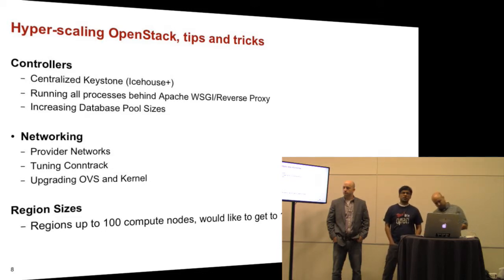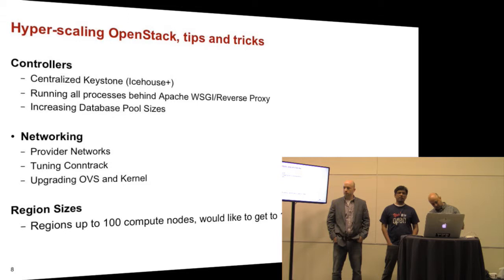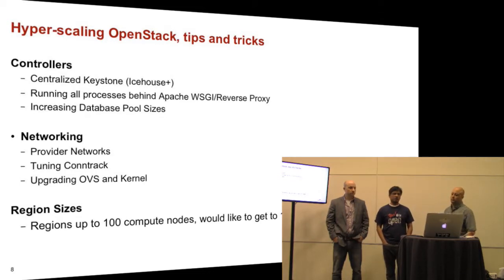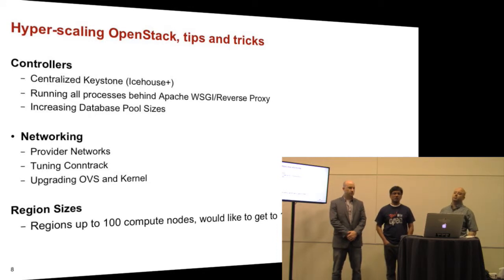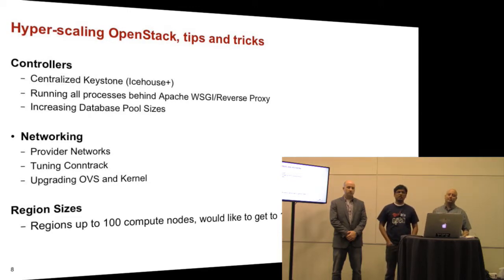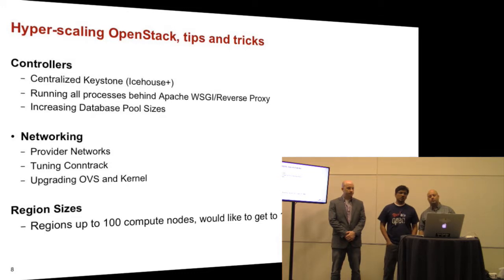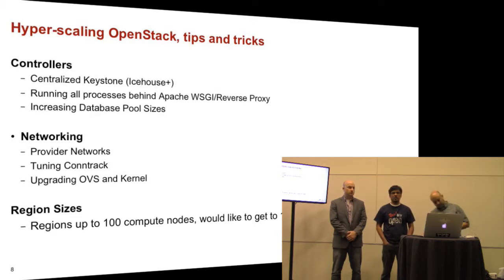On networking, a challenge with Neutron in previous OpenStack versions was a scalability limit — a single network node had to take all network traffic, which didn't work for us. We chose provider networks, which lets us offload network functions onto upstream network gear that can handle large loads, while the OpenStack infrastructure only needs to handle the L2 pieces. For some workloads we also had to tune the Linux kernel to handle security groups with a large number of rules in IPTables.